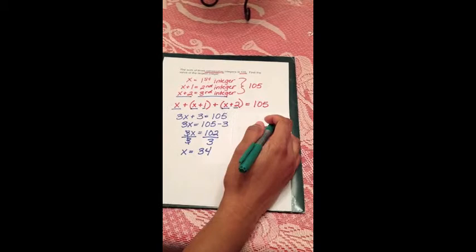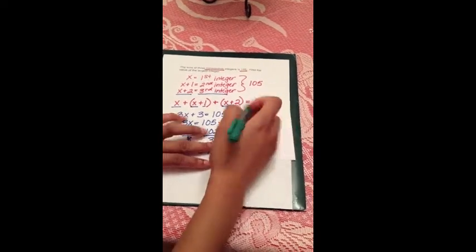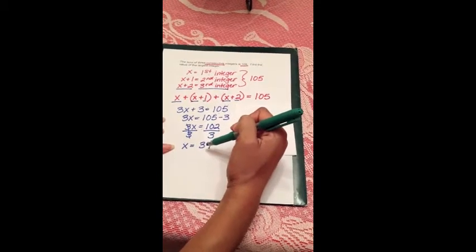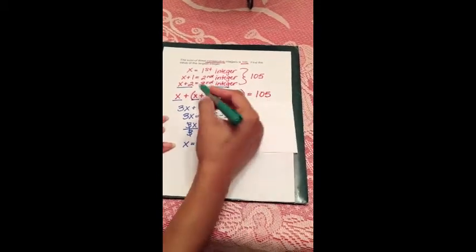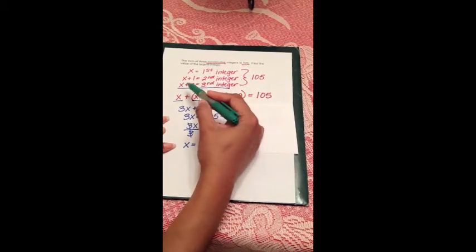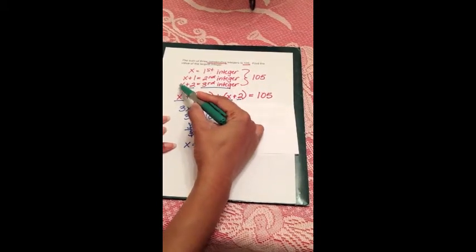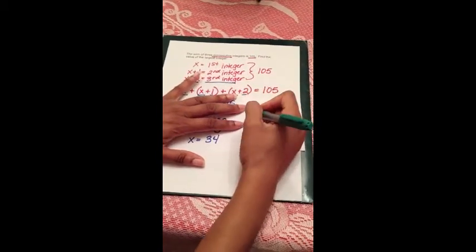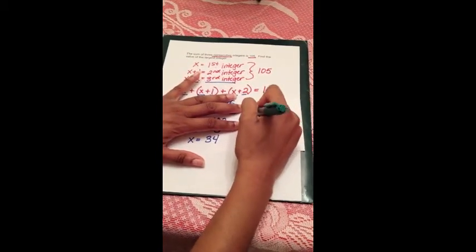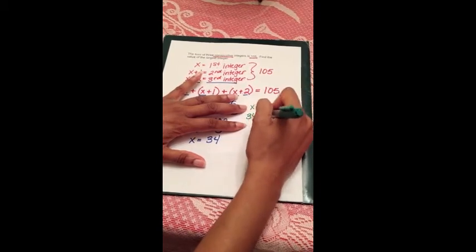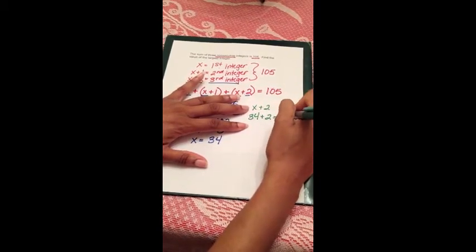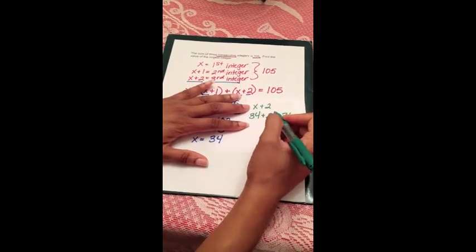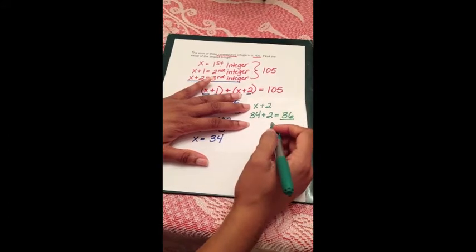Now the problem is asking us to find the value of the largest integer. So far, we have only found the first value, which is 34. We have to go back and see what the third integer equals, which is x plus 2. So we take x plus 2, or 34, which is our x value, plus 2, and that gives us 36. We have calculated the value of the largest integer.